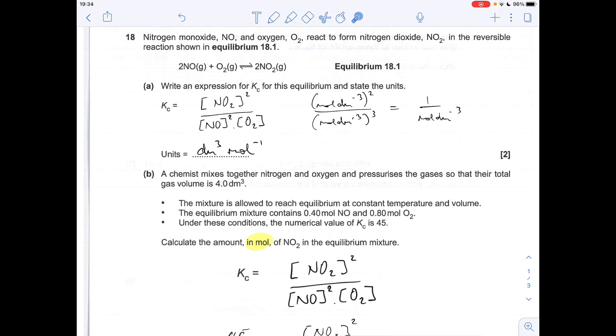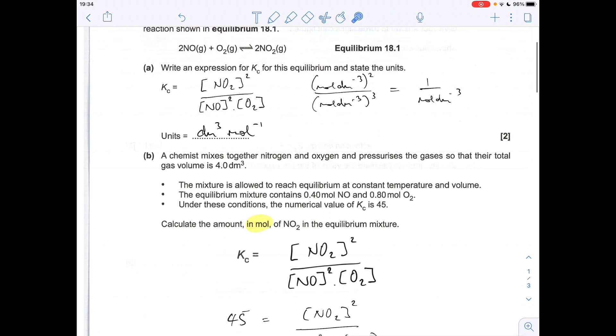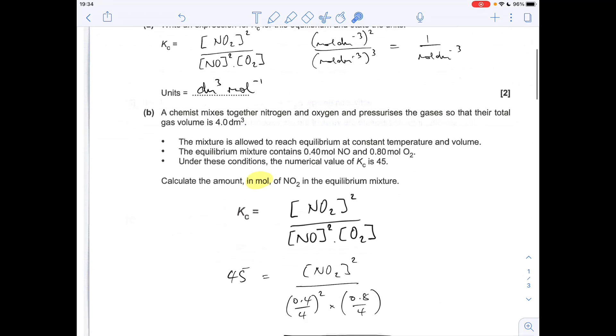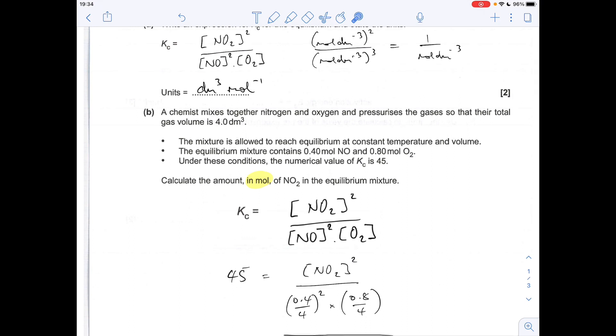Part B: We've got to calculate the amount in moles of NO₂ in the equilibrium mixture. Our initial answer is going to come from this Kc expression in mol/dm³ because we're going to get the concentration of NO₂, and we just need to factor in the volume and get it into moles.